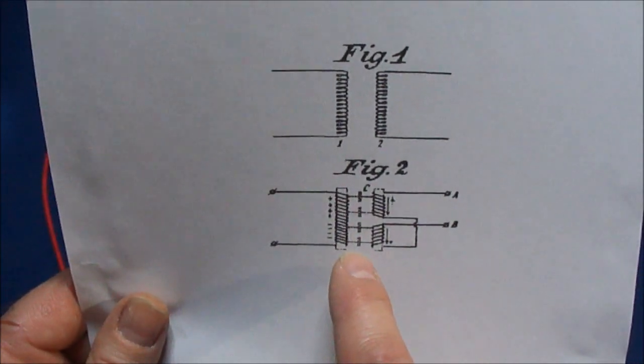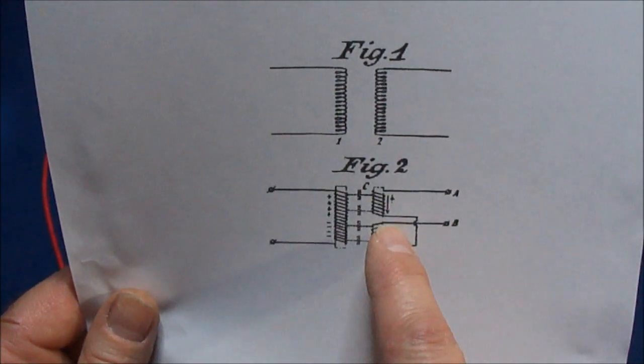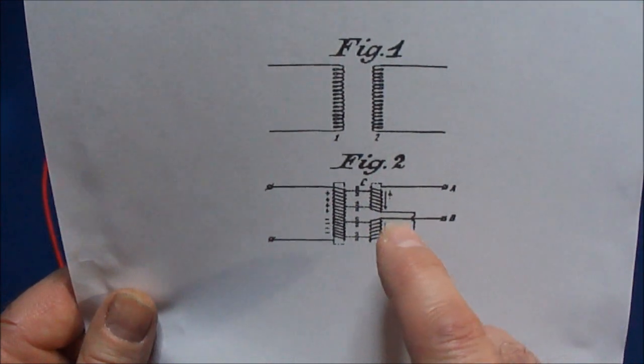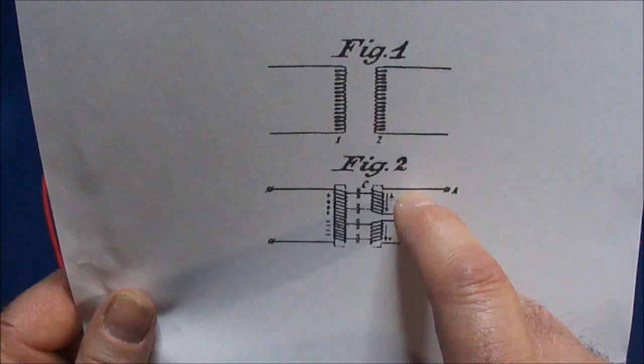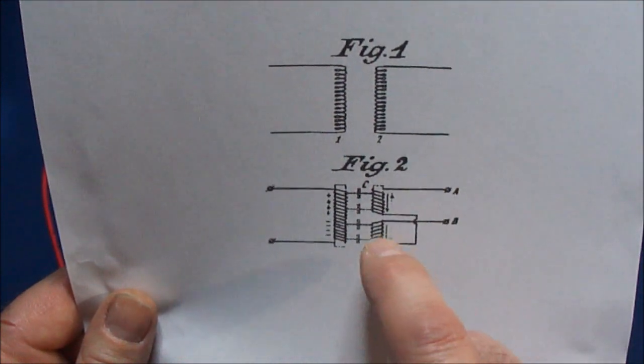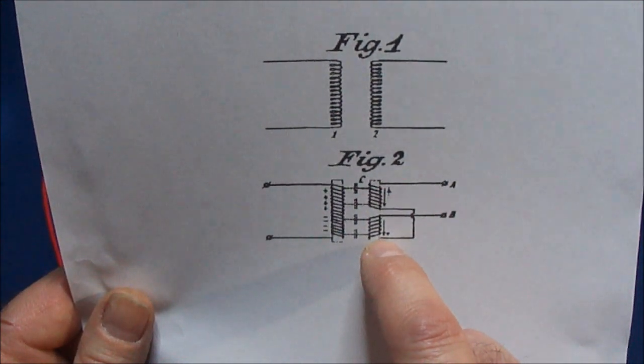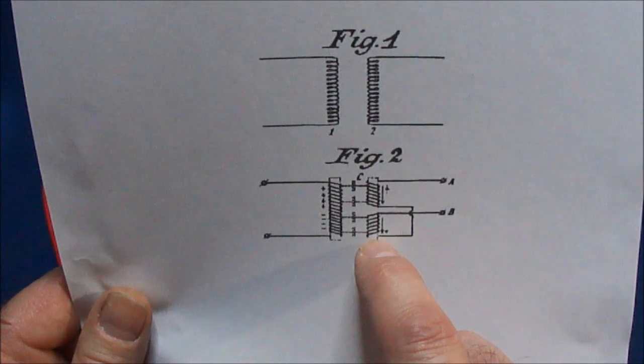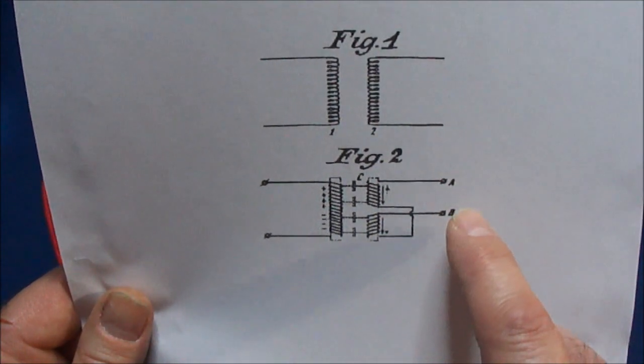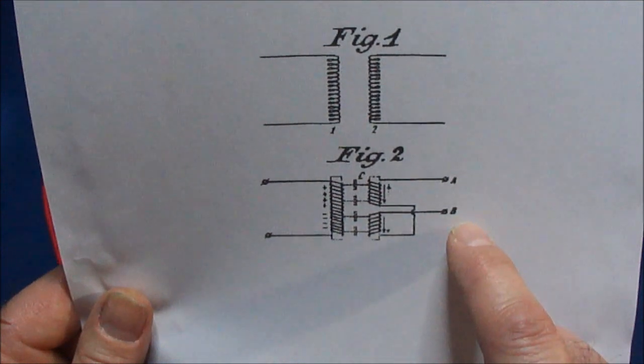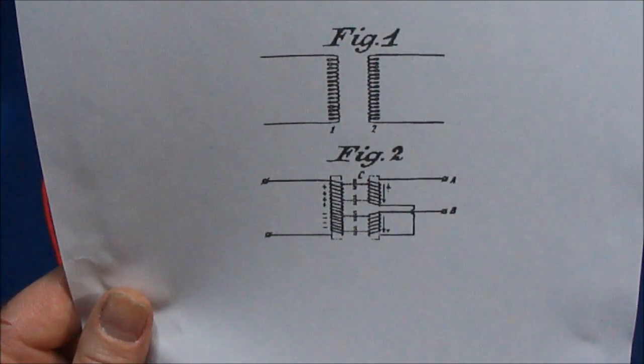The primary is wound over top of the secondary, but the secondary is split into two halves. One half is wound starting from the middle to the outside and the other half of the coil is wound in reverse starting from the bottom going up to the middle. So in other words A and B is the outer parts of the windings.